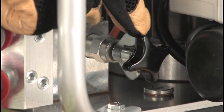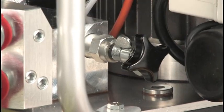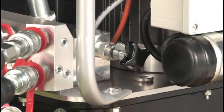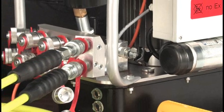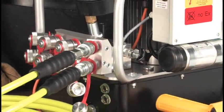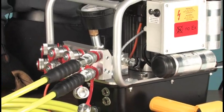By limiting the pressure the pump will generate, we control the maximum torque output of the wrench. Until the pressure is reset, every nut and bolt will receive exactly the same torque. We will show you how this is done in a few moments.